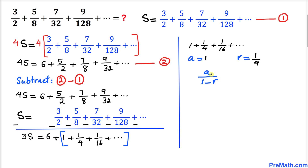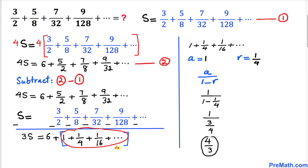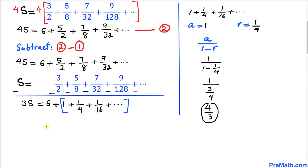Let's find the value of a divided by 1 minus r by filling in the values. a is 1, divided by 1 minus 1 over 4, which is 3 over 4. This can be written as 4 over 3. So this part of the series simplifies to 4 over 3.